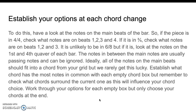To establish your options at each chord change, look at the notes on the main beats of the bar. If the piece is in 4/4, check beats one, two, three, and four. If it's in 3/4, check beats one, two, and three. If it's in 6/8, look at the notes on the first and fourth quaver, or the first and second dotted crotchet. The notes in between the main beats are mainly passing notes — you can ignore these a lot of the time as they just link the melody together.